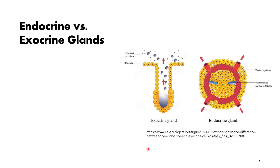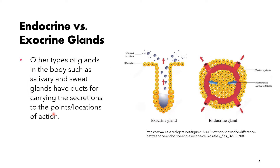We have two major types of glands in the body: the endocrine and the exocrine glands. Other types of glands, such as the salivary and the sweat glands, have ducts for carrying secretions to their points of action. These are considered exocrine glands because they have ducts, whereby secretions are released to the surface. For endocrine glands, secretions are directly released into the blood circulation, where hormones from the endocrine cells are dumped directly into the blood.